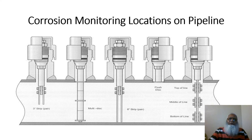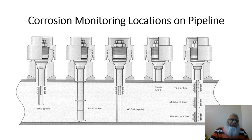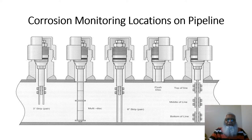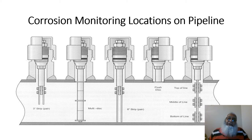This slide shows corrosion monitoring locations on the pipeline. There are various ways to install monitoring devices: starting with three-inch corrosion coupons not installed to the middle of the line, and multi-disc coupon installations where more than one disc is used to monitor corrosion at the top, middle, and bottom of the line. Long six-inch strip coupons and flush disc coupons — surfaced to the bottom surface of the top of the line — ensure the installation is not affected by pigging operations.